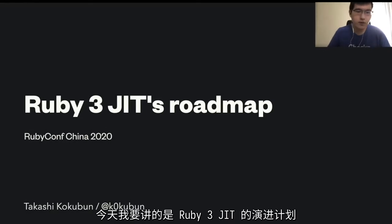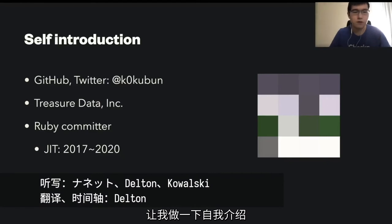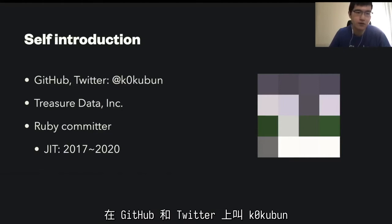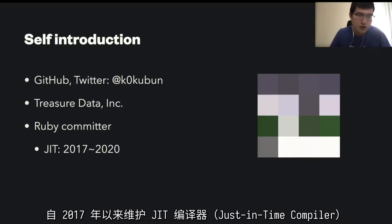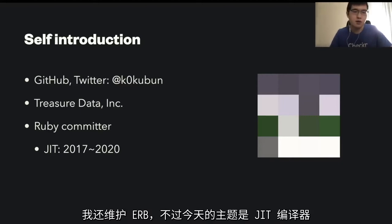Today I'm going to talk about Ruby 3.x JIT roadmap. Let me introduce myself first. My name is Takashi Kokubun, and on the internet I'm known as Kokubun on GitHub and Twitter. I'm working as a backend developer at Treasure Data, and I've been a JIT compiler maintainer since 2017. I also maintain ERB, but today's focus is on JIT compiler.